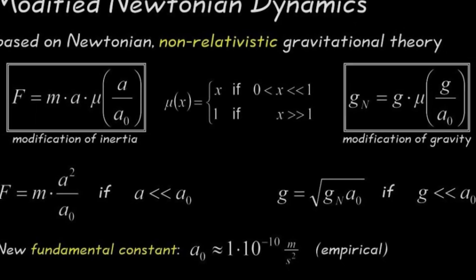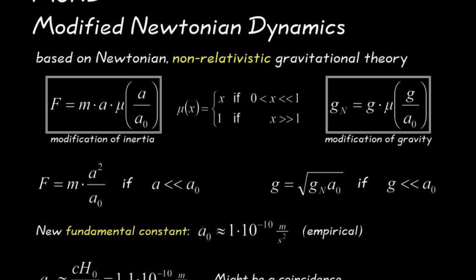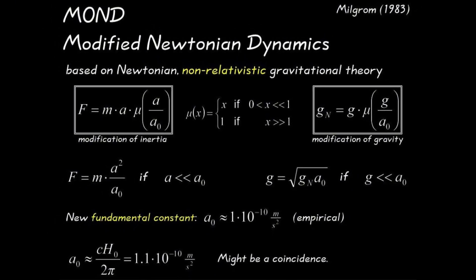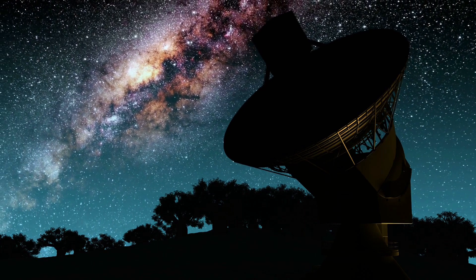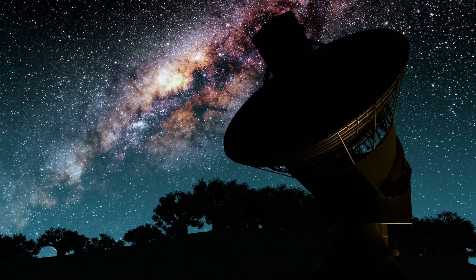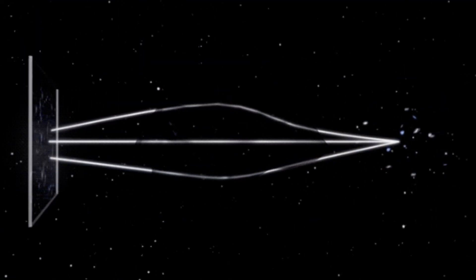We still end up with something that's way out of step with the standard model. So MOND steps in with an explanation that, at least in this narrow case, works. But here's the catch. MOND has problems of its own. While it can explain certain galactic behaviors, it doesn't fit easily into a broader framework that explains everything else, like the cosmic microwave background, galaxy clusters, or gravitational lensing.